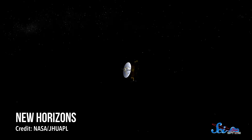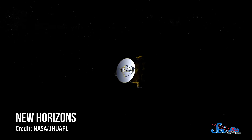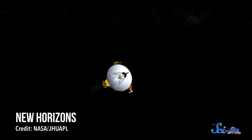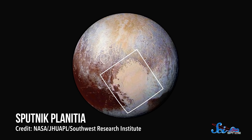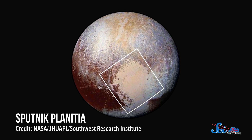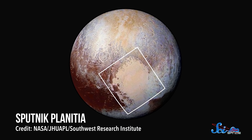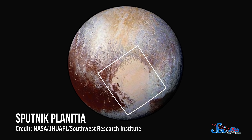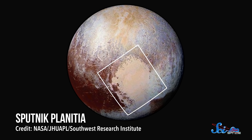In the study, the team figured this out by running some models made with data from the New Horizons spacecraft. The models show how in the northern part of Sputnik Planitia, where it's currently summer, ice turns into gas during the day and then raises the local air pressure. Then, that gas moves south to areas of lower pressure, and since it's currently winter in the south, the gas then freezes back onto the ground.